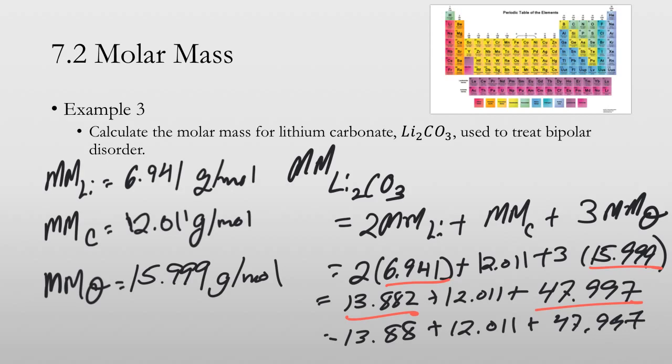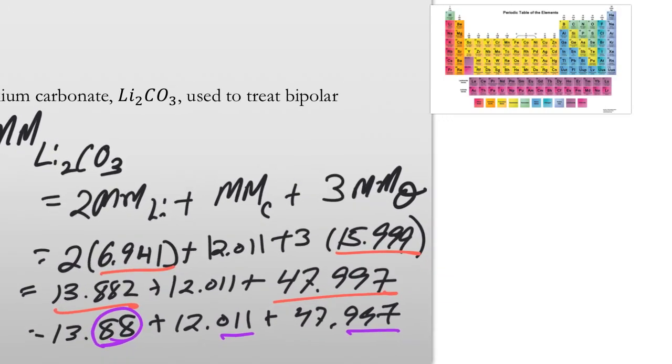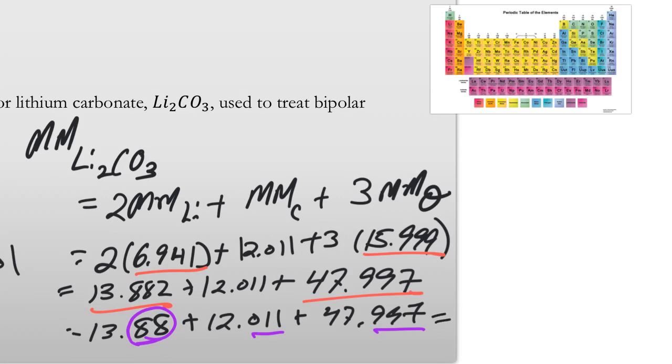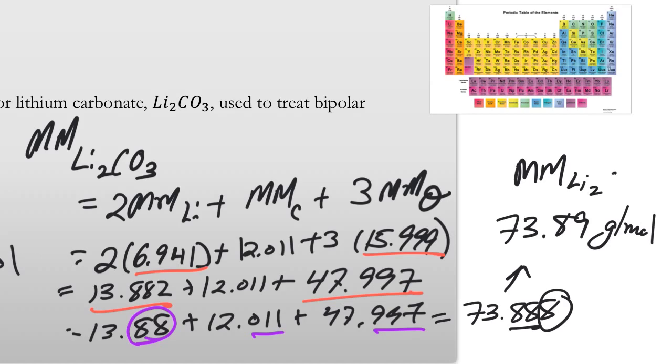Now when we're adding, we look at decimal places. Two, three, three, which means we go to two. So when we add those up, we get, technically on your calculator it'll say 73.888, but again it has to be to two. There's an eight there which makes this round up. So we get 73.89 grams per mole for the molar mass of lithium carbonate.